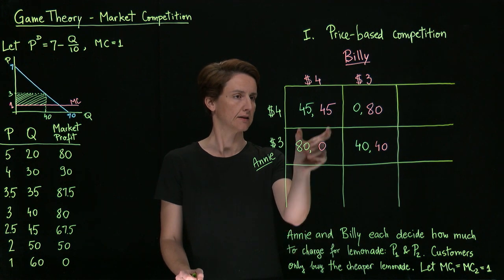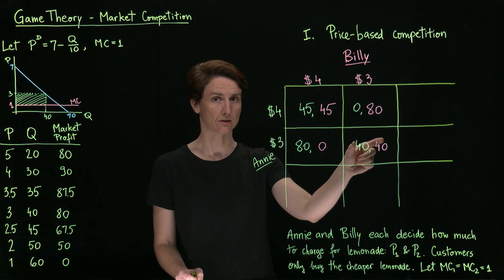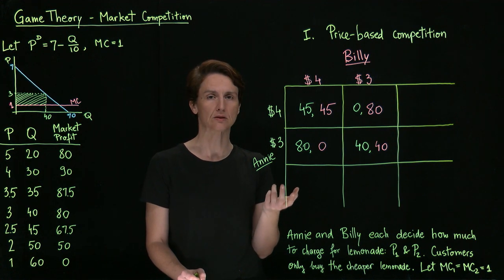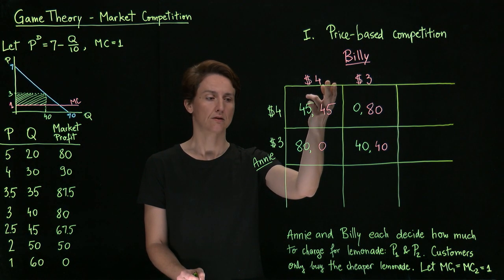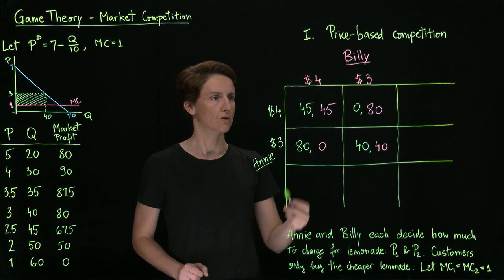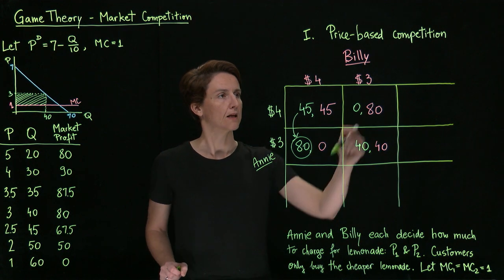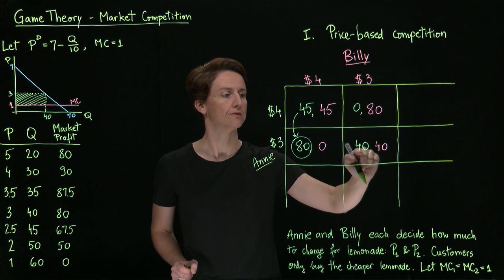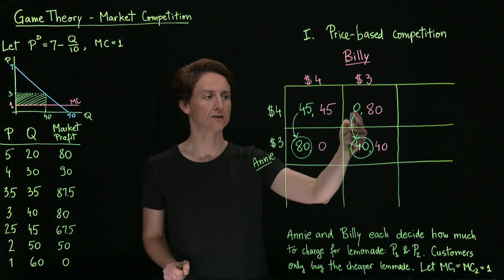One thing we can spot is that if the two children set equal prices, they will both be better off if they set price at $4 rather than $3. So the question is, is that the outcome we can expect? To solve this game, the first step will be to find the best responses for both Annie and Billy. Let's first put ourselves in Annie's shoes. If Billy prices at $4, then her payoffs would be $45 if she also prices at $4, or $80 if she prices below. So her best response is to set price at $3. If Billy sets price at $3, then her options are to earn $0 if she sets price above, or $40 if she also sets price at $3 — so her best response in this case too is to price at $3.